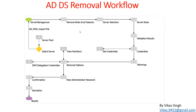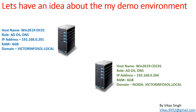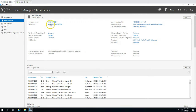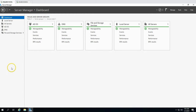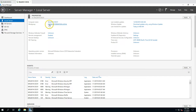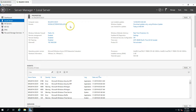Let's go into the lab environment. We have two domain controllers: one for victorinfo.local, which is the parent domain running on win2k19dc01 with IP 192.168.0.201, and one for noida.victorinfo.local, which is our child domain running on cdc01. In this video we are going to demote and delete noida.victorinfo.local from our production environment.